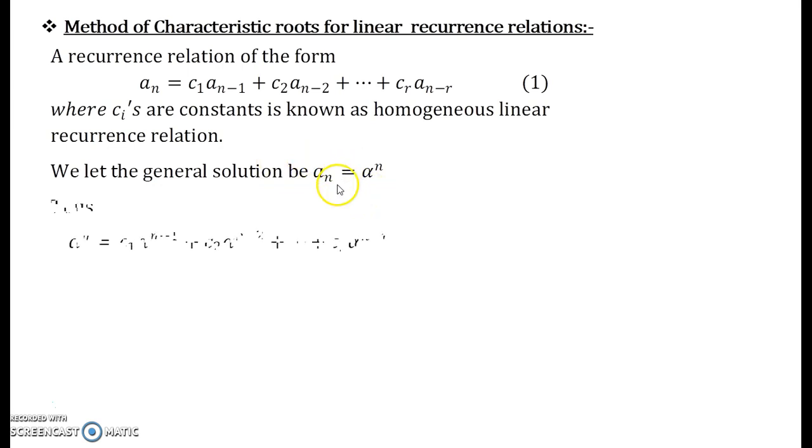Now thus what you have is the linear recurrence relation gets converted into this format. Now what you do is you divide both the sides by α^{n-r}. When you divide this entire equation by α^{n-r} you happen to get this equation: α^r = c₁α^{r-1} + c₂α^{r-2} + ... + c_r.